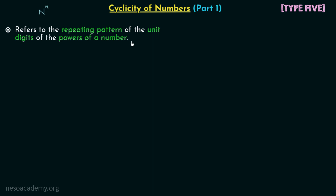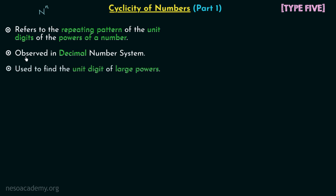Cyclicity is observed in the decimal number system, so the repeating pattern we just discussed will be found in the decimal number system. The cyclicity of a number can be used to find the unit digit of large powers. When the value of n is large and we are interested in finding the digit at the units place, we can use the knowledge of cyclicity to find it without going through tedious calculations.